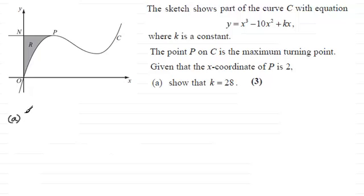Now we should be familiar with the fact that at P, because it's a maximum turning point, the gradient would be zero, and to get the gradient we need to differentiate our equation here with respect to x. So if we differentiate this, equate this to zero when x equals 2, then we should be able to solve this and show that k equals 28.